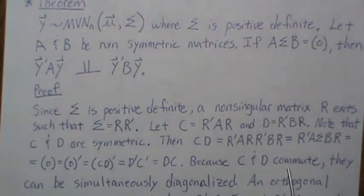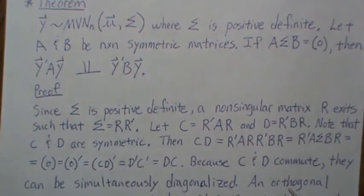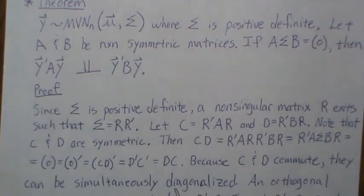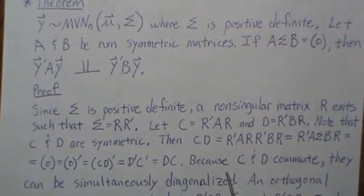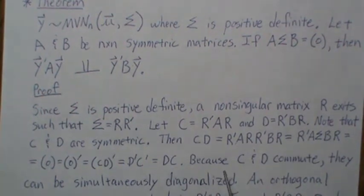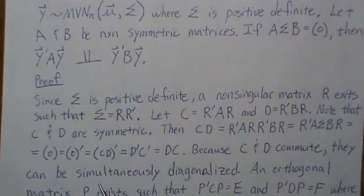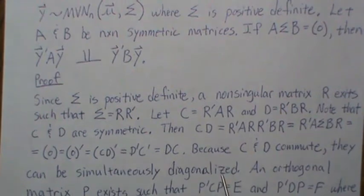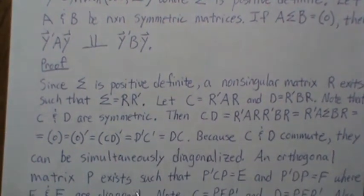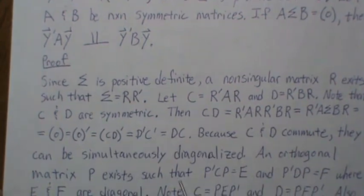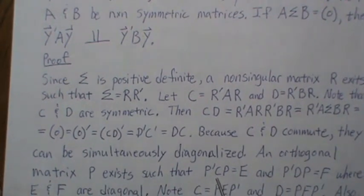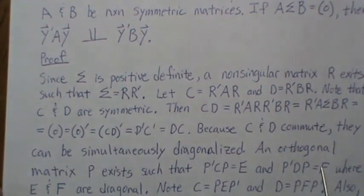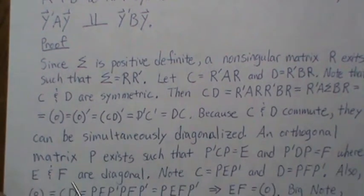Now, because C and D commute, and whenever you do a theorem, you always wonder how far back do you have to go to start proving things. I stopped at this point. Maybe we'll create another video and prove this, but I didn't for this video. So because C and D commute, they can be simultaneously diagonalized. That's a pretty common theorem in the diagonalization world. So that means an orthogonal matrix P exists.